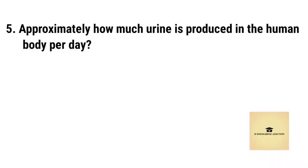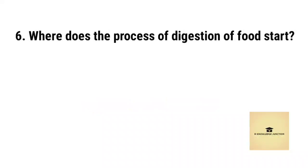Approximately how much urine is produced in the human body per day? Right answer is approximately 1 to 1.5 liters. Where does the process of digestion of food start? Right answer is mouth.